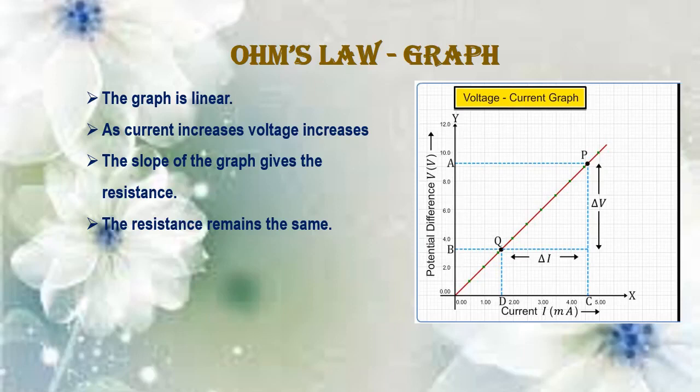What is the slope? The slope is the difference in the y-coordinate divided by the difference in the x-coordinate. Here the y-coordinate is potential difference and the x-coordinate is current. So R = ΔV / ΔI.